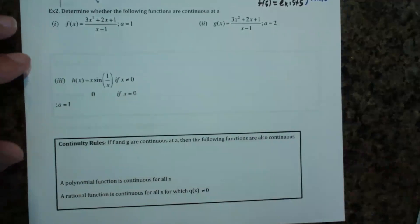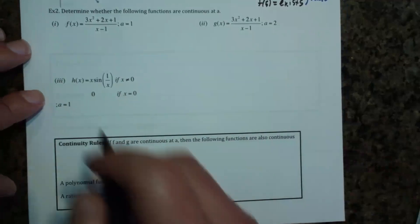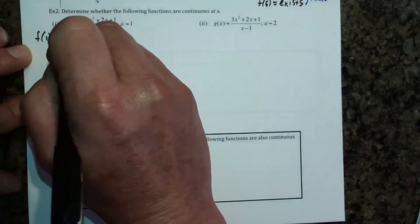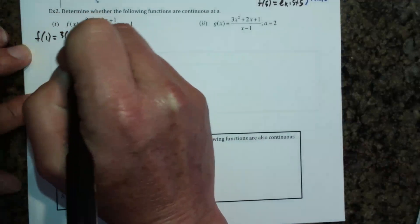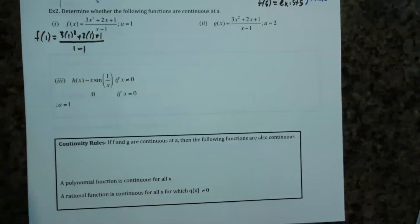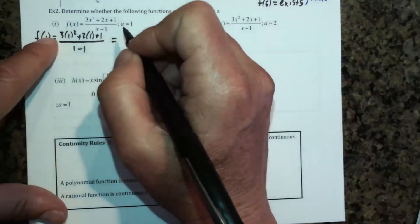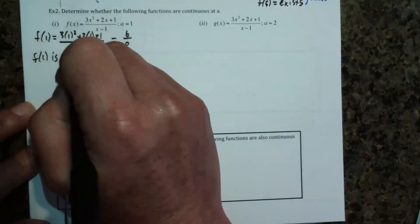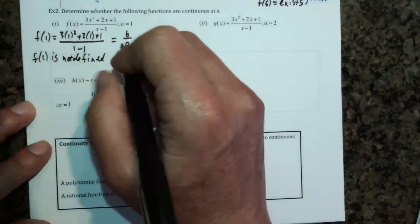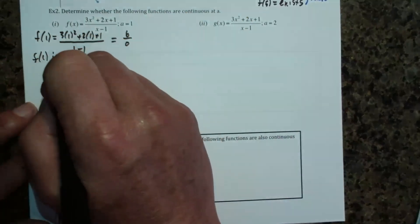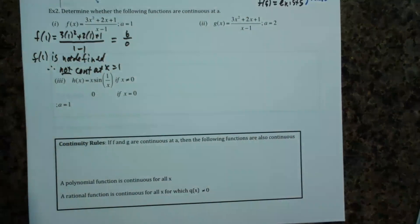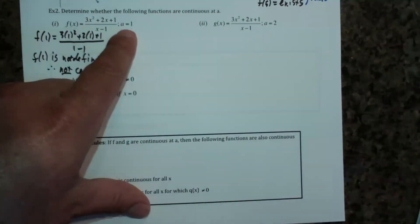Example two. Let's find F(1) first to see if that even exists. When we plug in, we get three plus two is five, giving us six over zero — so it's not defined. Therefore, the function is not continuous at x equals one.